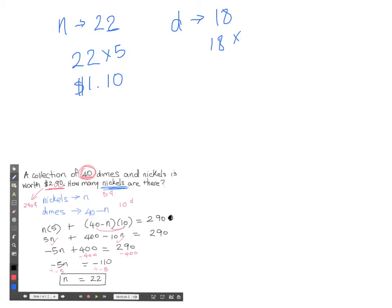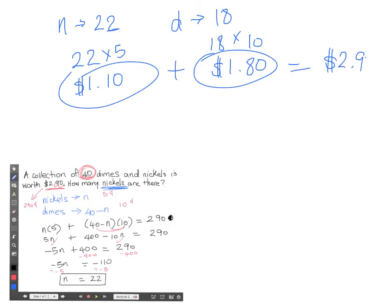So we can otherwise say the value of our dimes is 180. Now when we put that together, our nickels and our dimes, we do in fact get two dollars and 90 cents. So yes, our answer does make sense.